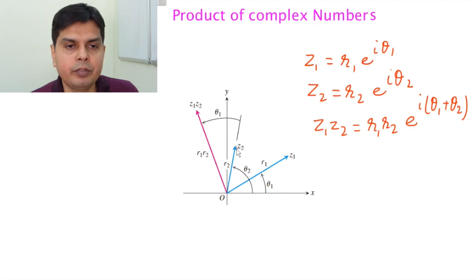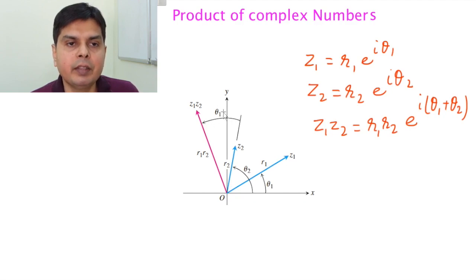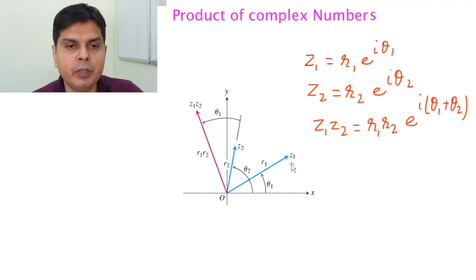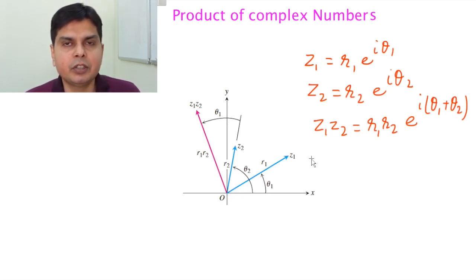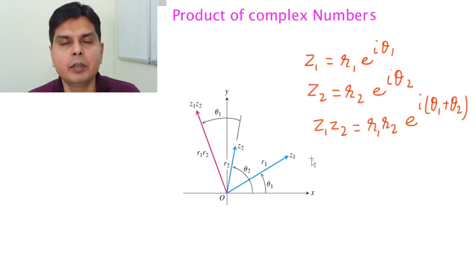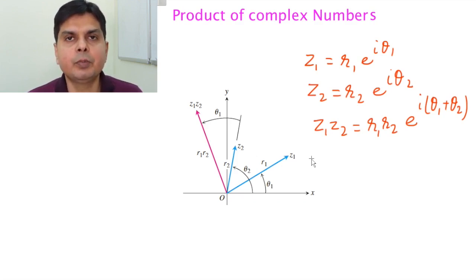The product z1·z2 is given by the red vector, and its angle is θ1 + θ2. Effectively, vector z2 has been rotated anti-clockwise by angle θ1. So when a complex number is multiplied by another number, it gets rotated in the anti-clockwise direction by the argument of the number by which it is being multiplied.